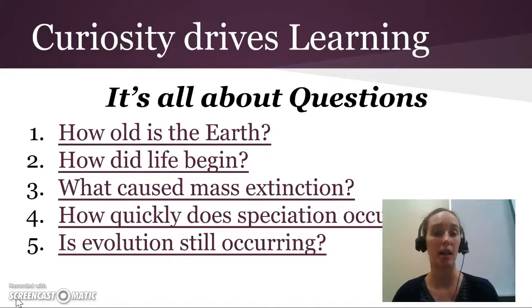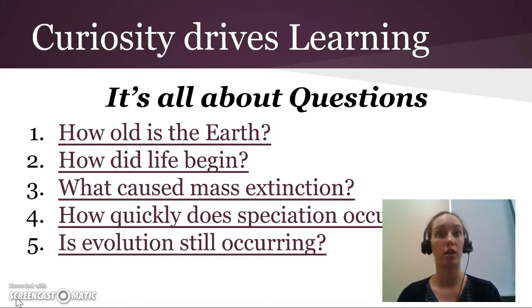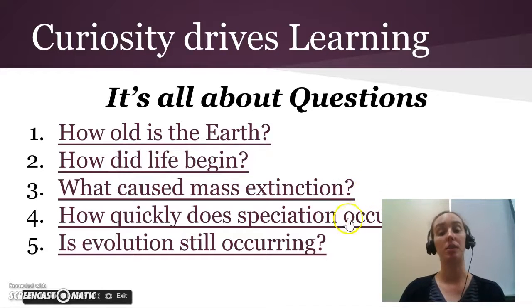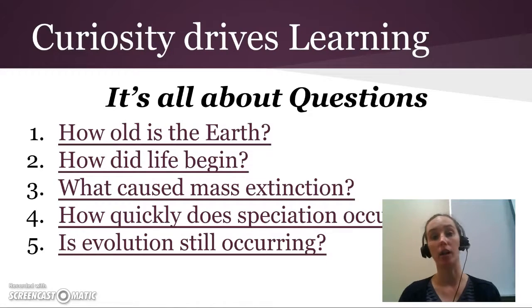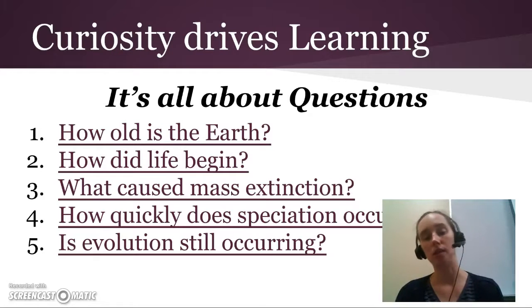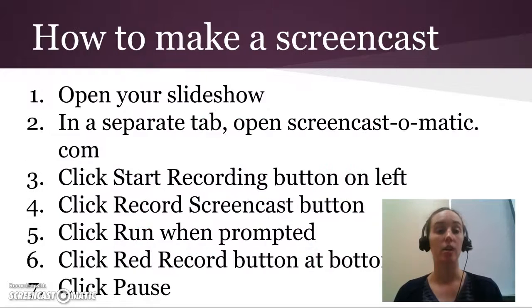The questions students are given to answer — note I have them do this in pairs, no larger than a group of three — are broad questions: How old is the Earth? How did life begin? What caused mass extinctions? How quickly did speciation occur? And is evolution still occurring? They won't just come back with '4.54 billion years old' — they need the actual evidence: how do we know that, what's the science behind it, what are some examples.